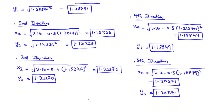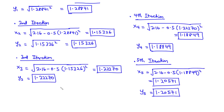After 5 iterations, the approximate root of the system of non-linear equations, corrected to 6 significant figures using the Gauss-Seidel iteration method, is: x5 equals 1.20571 and y5 equals 1.20571.